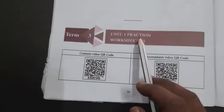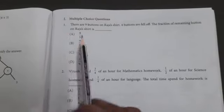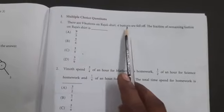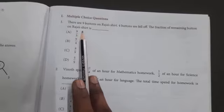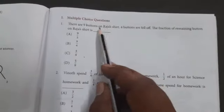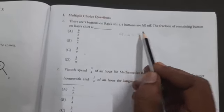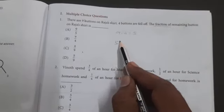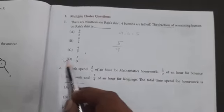Welcome to Simple Math, topic fraction worksheet number 15. First, Roman numeral one, multiple choice questions. There are nine buttons on Rajah's shirt. Four buttons fell off. The fraction of remaining buttons on Rajah's shirt is: So Rajah had a shirt with nine buttons total. Nine minus four equals five, so five buttons remain. In fraction form, that's five divided by the total nine, so five by nine. Option D is the correct answer.